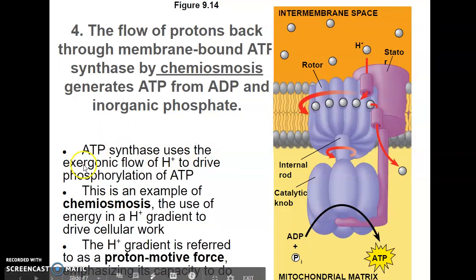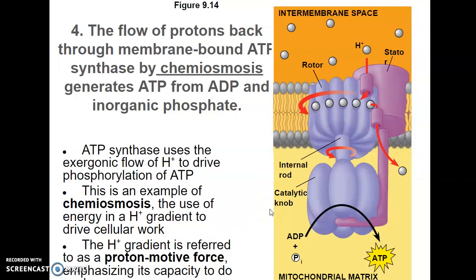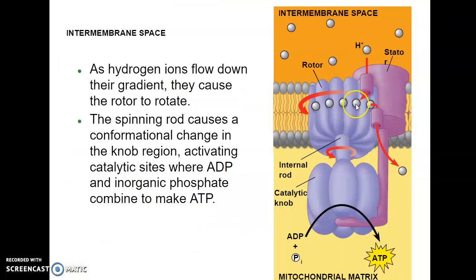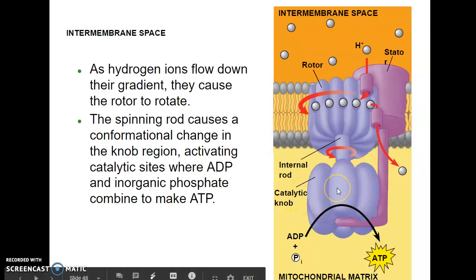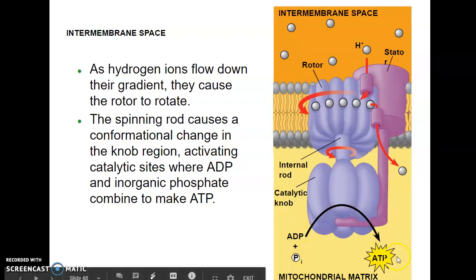ATP synthase uses the exergonic flow of hydrogen ions to drive phosphorylation of ATP. This is chemiosmosis — the use of energy in the hydrogen ion gradient to drive cellular work. The hydrogen ion gradient is referred to as the proton motive force, emphasizing its capacity to do work. As the hydrogen ions flow down their gradient, they cause the rotor to rotate, the spinning rod causes the internal rod to spin, and that causes a conformational change in the catalytic knob — activating the catalytic sites where ADP and inorganic phosphate combine to form ATP.